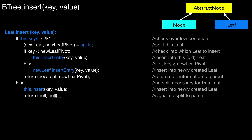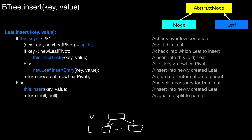Delete and merge operations can be implemented in a similar way. One final remark on the split operation: what happens if the root of a B-tree is split? Assume we have a root node pointing to a number of leaves, and now we have an overflow in that node. We have a pointer pointing to that root node — but what happens if we split it?